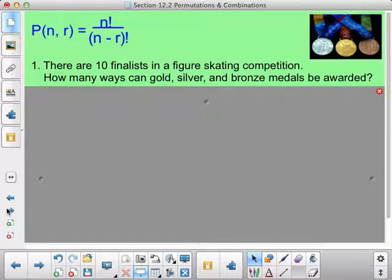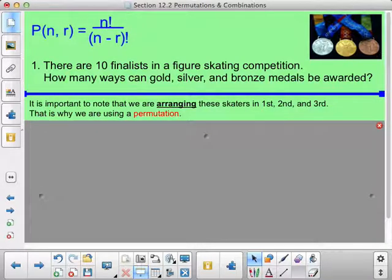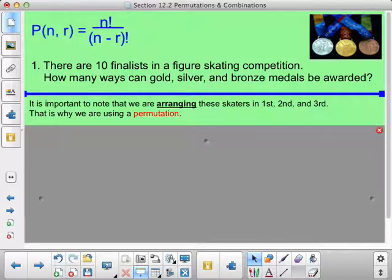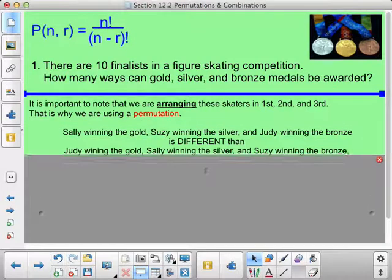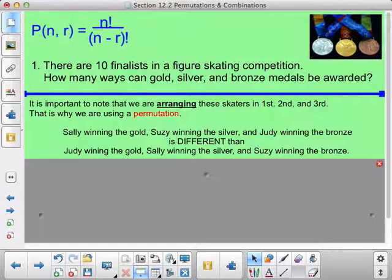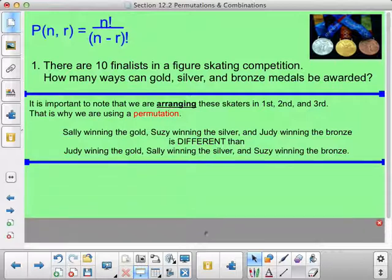So here is an example. There are 10 finalists in a figure skating competition. How many ways can gold, silver, and bronze medals be awarded? So I have my formula for permutation. We're arranging these skaters in first, second, and third. So that's why this one is a permutation. Order matters. Sally winning the gold, Susie winning the silver, and Judy winning the bronze is different than Judy winning the gold, Sally winning the silver, and Susie winning the bronze.